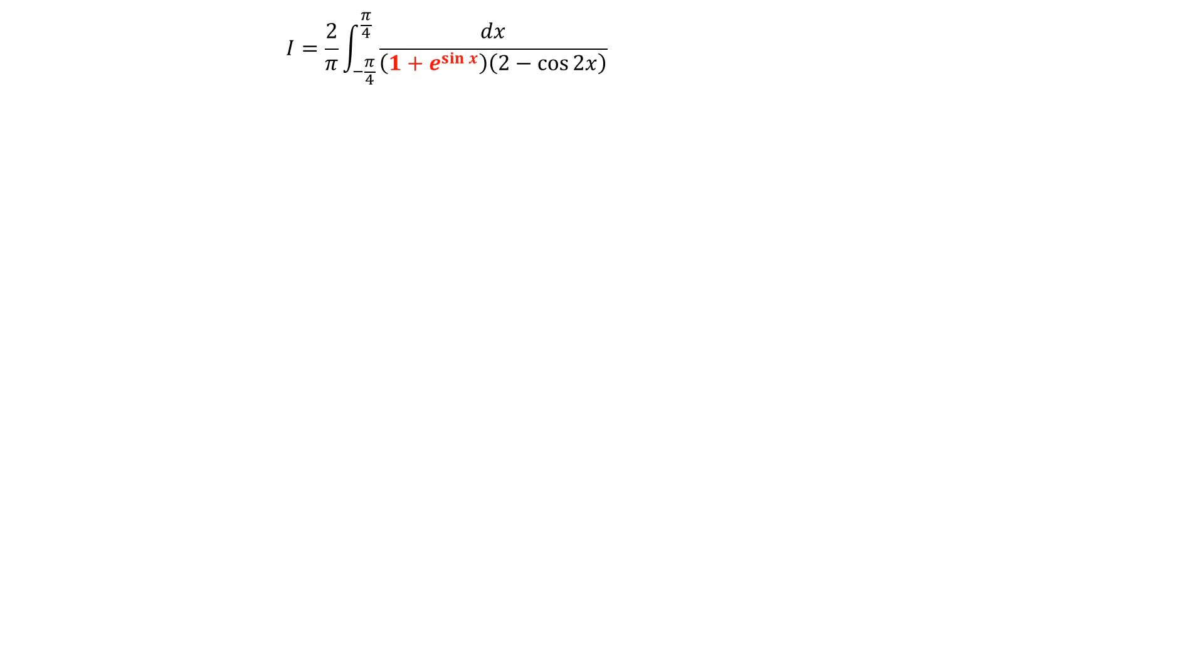We would like to compute I. The first issue we have comes from this term 1 plus e to sin x. I'd like to get rid of this term. But generally speaking, we can get rid of 1 over 1 plus e to f(x) when f is an odd function. It comes from this.